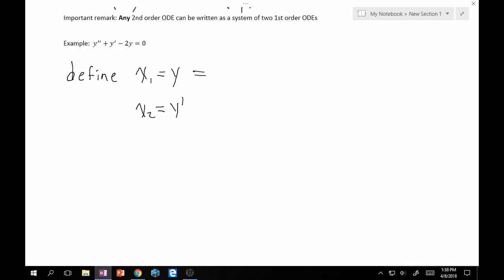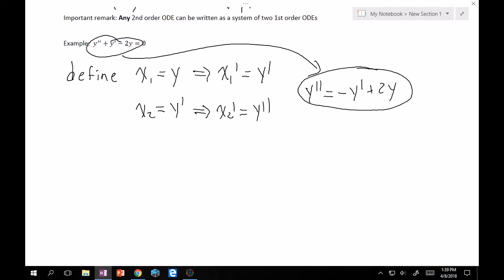Okay, so why would I do that? Because then, x1 prime is equal to y prime, right? And then x2 prime is equal to y double prime. Good. So now let's take this guy and put him over here. Combine everything that we know. So y double prime is equal to minus y prime plus 2y. Right?